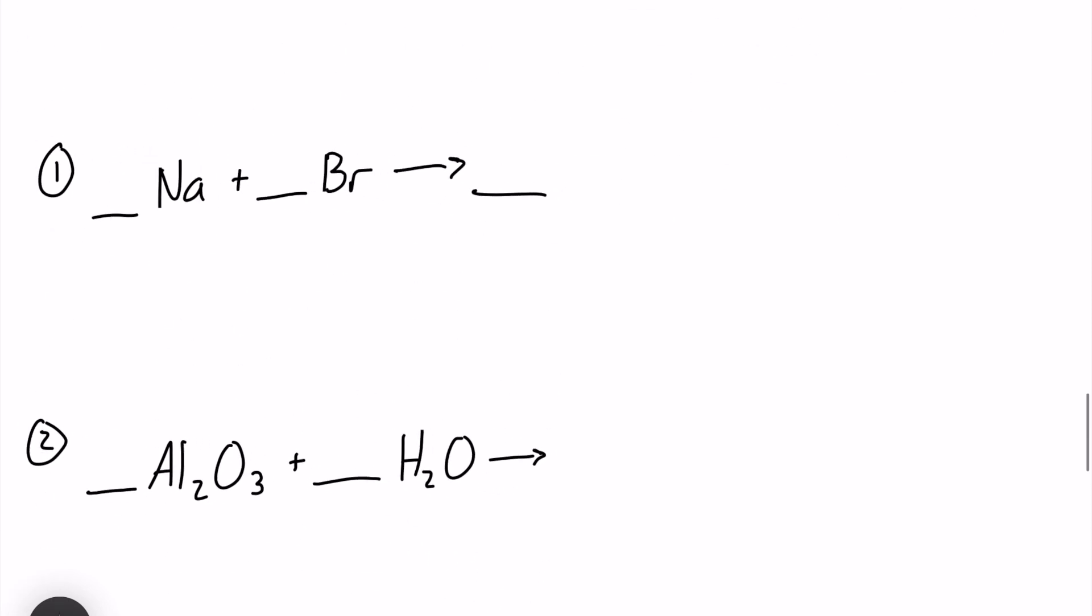Let's take a look at what ions will be present. We are going to have Na+ and Br-. Those charges will just neutralize one another and we are going to be left with NaBr, and this is a pretty easy one to balance, ones across the board.